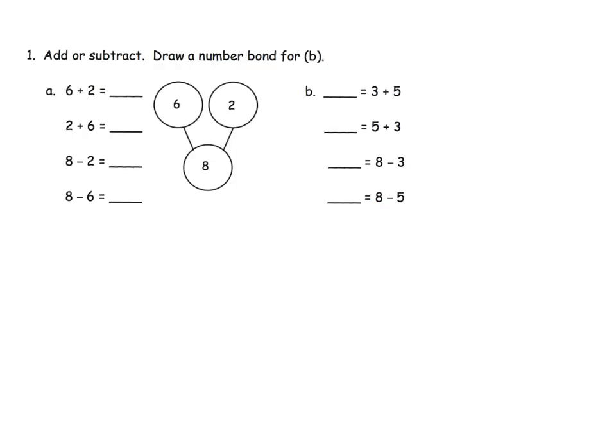So here it says add or subtract and draw a number bond for letter B. We're going to draw a number bond for this fact family. Let's start by looking over here. This is upside down compared to the ones we've seen previously, but the important thing is we want students to see that in this case here is our whole. It's an 8 and here are our parts.